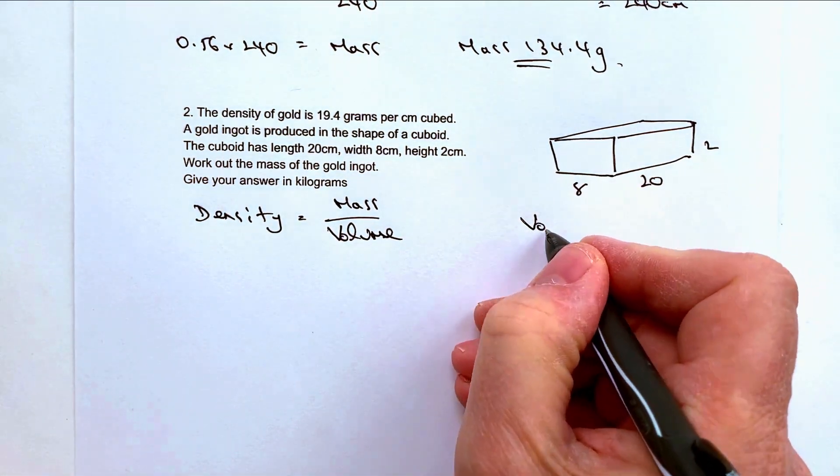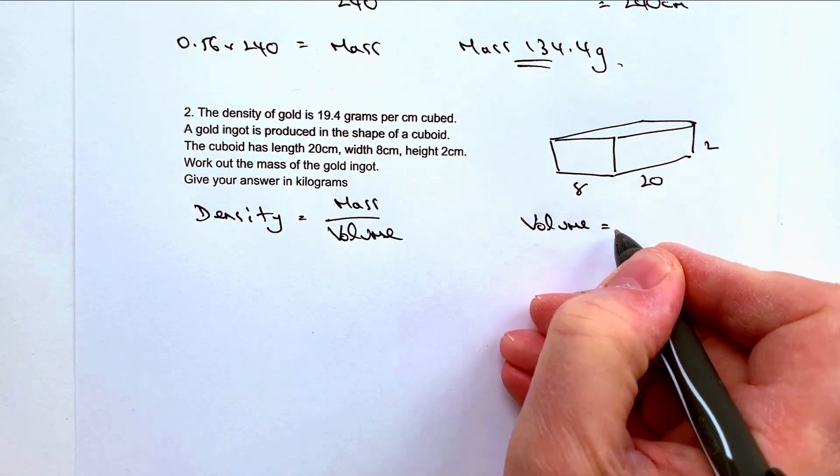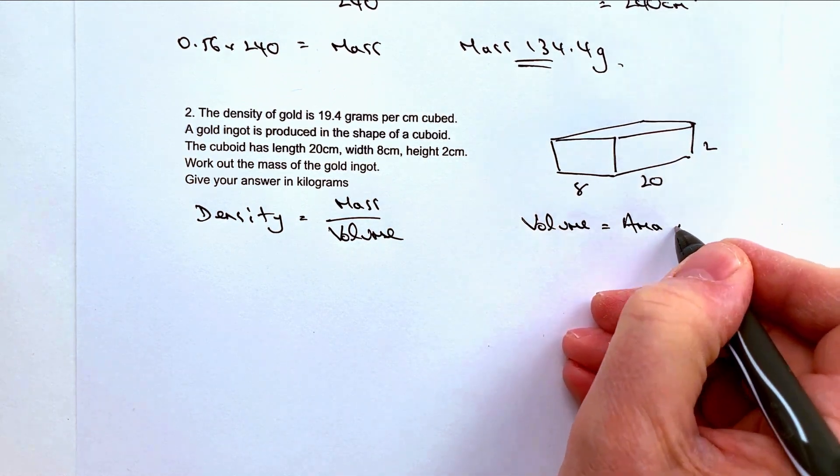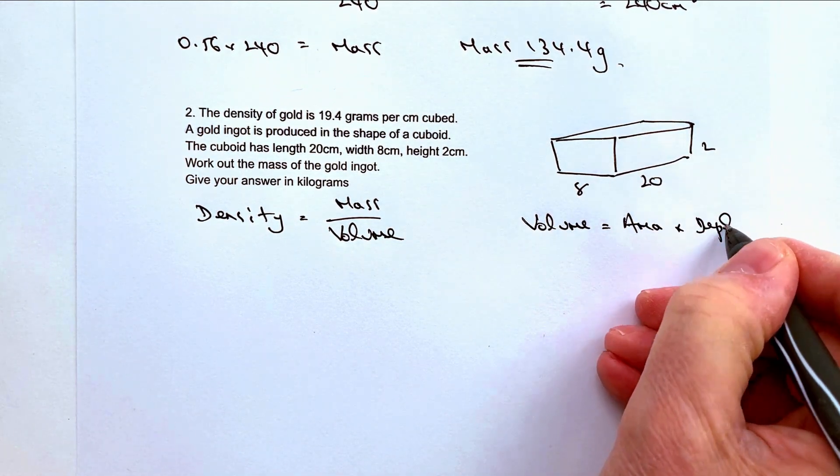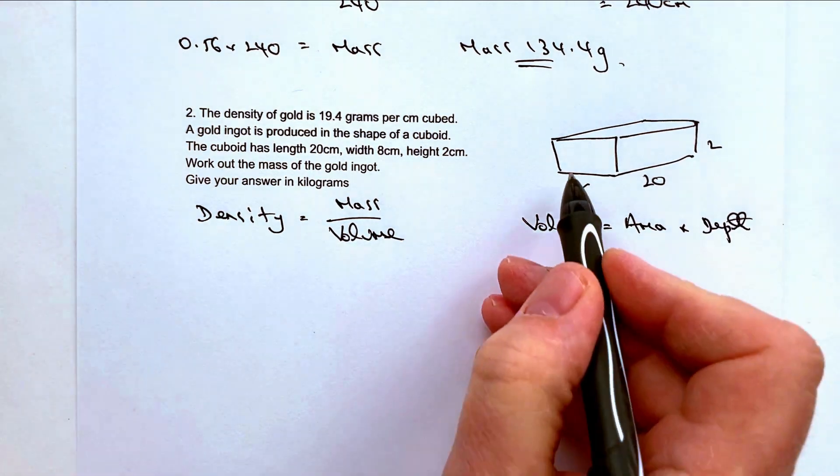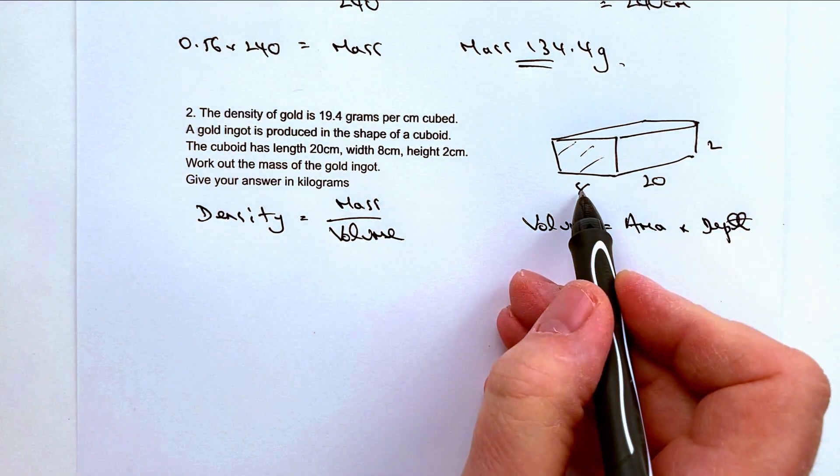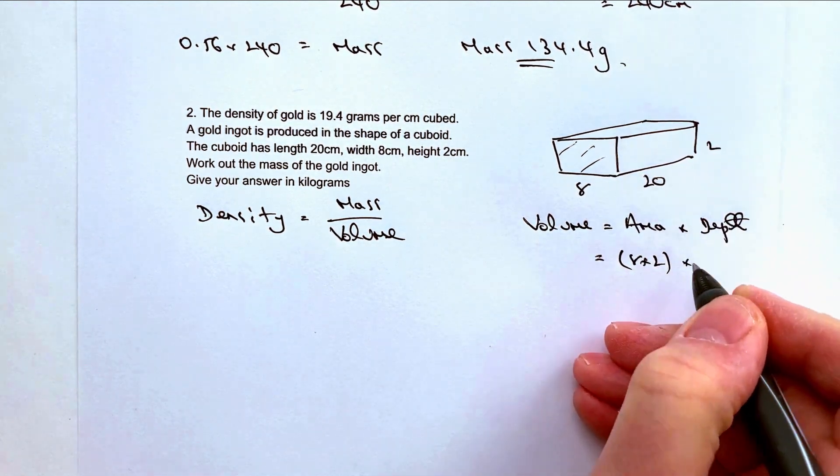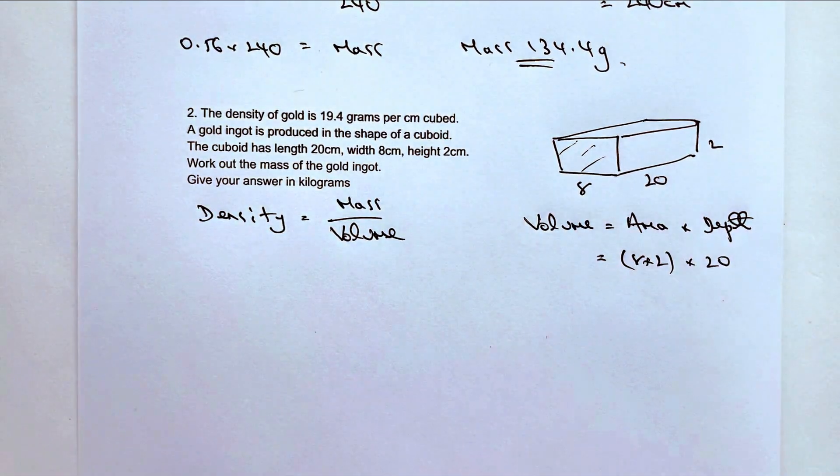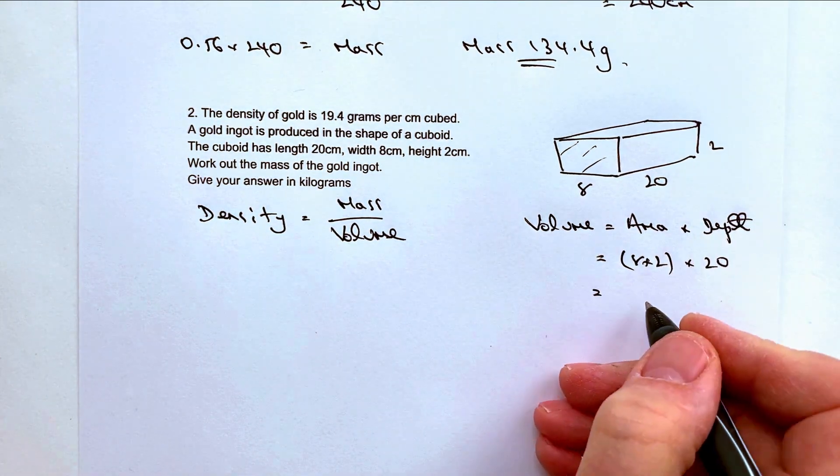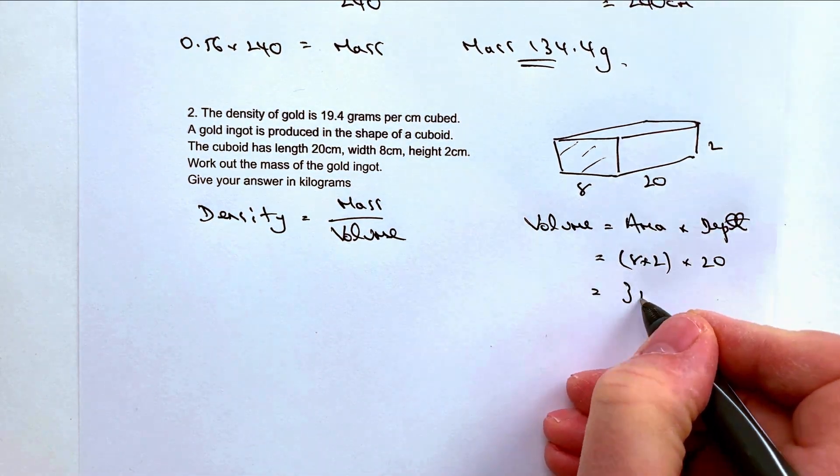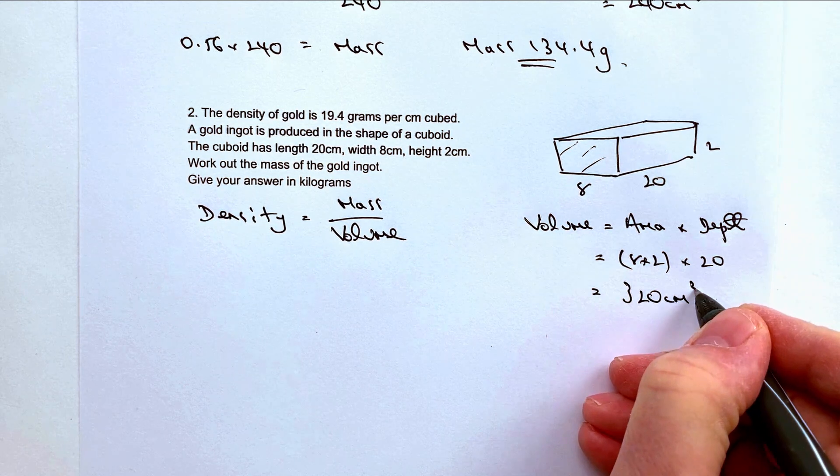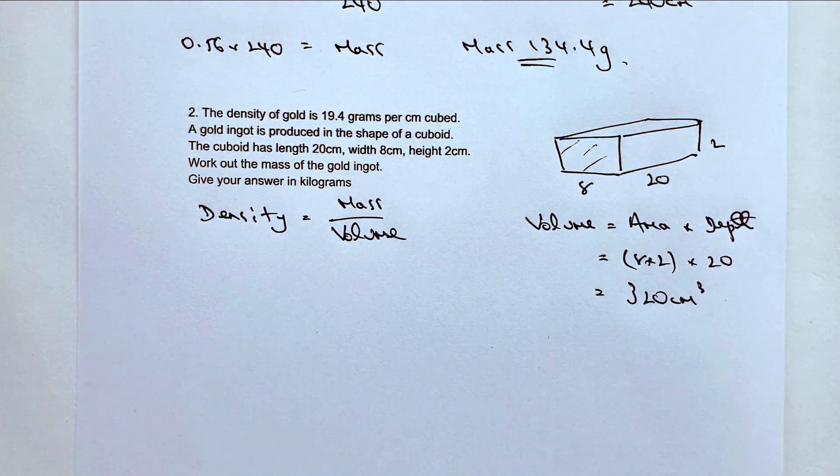So the volume is going to be equal to the area times the depth. Well the area is going to be this piece here which is 8 times the height of 2, so I'll put that into brackets 8 times 2, and the depth is going to be 20. Pop that in a calculator or work it out for yourself and that's going to be 320 centimeters cubed.